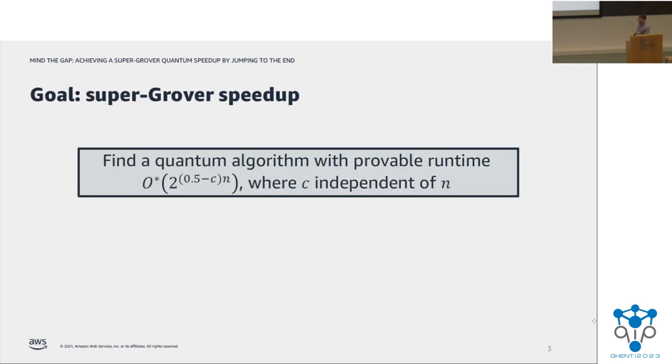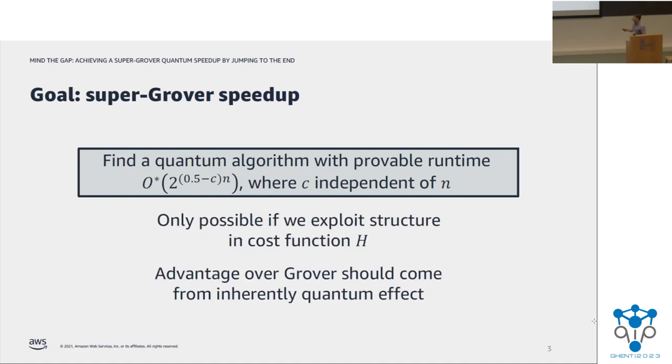So the goal of this talk is to see if we can go further on the quantum side and give a quantum algorithm with a provable runtime that's better than Grover's algorithm. So in particular, we're looking for a runtime that looks like 2 to the 0.5 minus C times N, where C is some constant that's independent of N. Importantly, we know that if we want to be able to accomplish this, we're going to have to exploit some structure in the cost function H, because we know that Grover's algorithm is optimal in the black box setting. This emphasizes how it's important that if we're going to find an algorithm that has a runtime like this, we need the way that we're leveraging the structure in the cost function to be something that's inherently quantum mechanical, because if we're just using some sort of classical technique that applies equally well, we can improve both, but we can't change the relative quadratic relationship. So if we hope to ever give a super quadratic speedup, we're going to need to find some ingredient that achieves this goal.